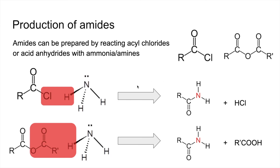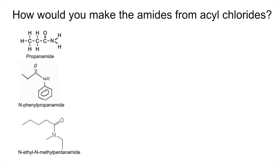If you wanted to make a secondary or tertiary amide, you'd use an amine instead of ammonia. For a secondary amide you'd have one R group on the nitrogen; for a tertiary amide you'd have two R groups — in other words, you'd use a secondary amine. So let's see how you'd make those three named amides from acyl chlorides — pause the video if you want to have a go first.